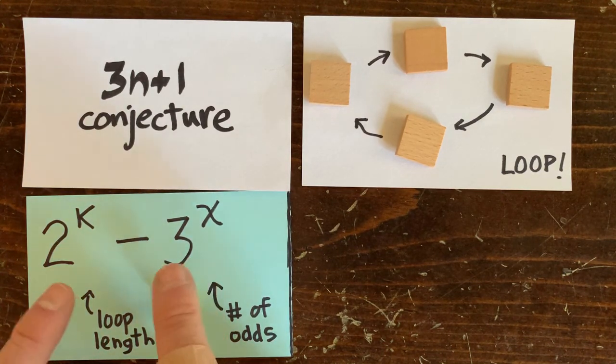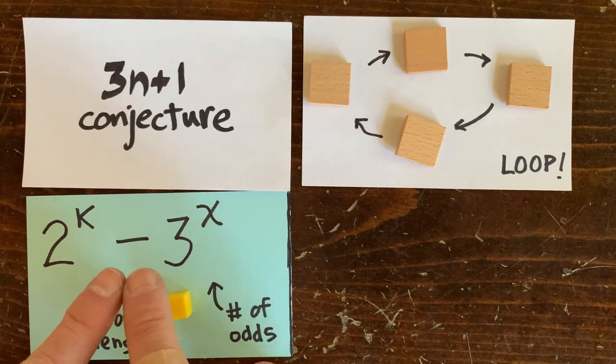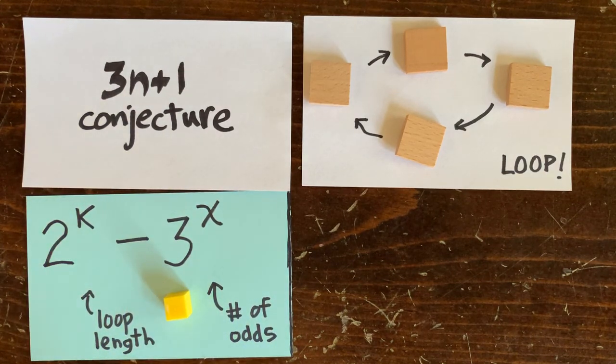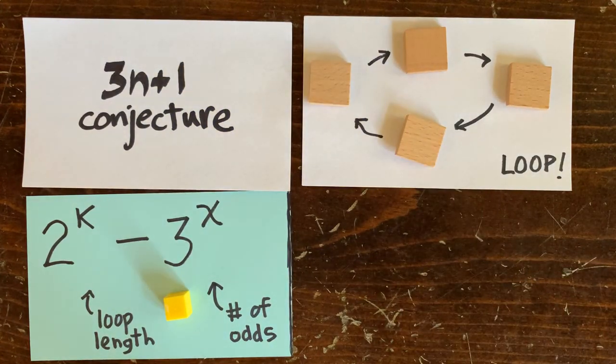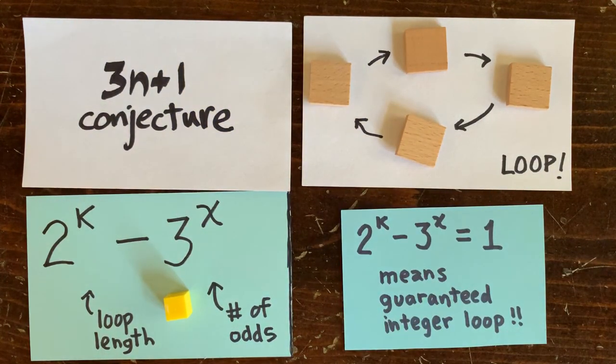Amazingly, we found that if 2 to the k minus 3 to the x is small, then there's a good chance of an integer loop at that length k. And in fact, if 2 to the k minus 3 to the x is 1, then an integer loop is assured and will be rich and famous. Well, not rich. Probably not famous.